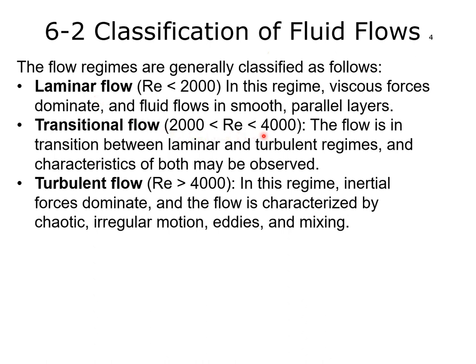For Reynolds numbers between 2,000 and 4,000, that's transitional flow. And for Reynolds numbers greater than 4,000, it's turbulent flow.